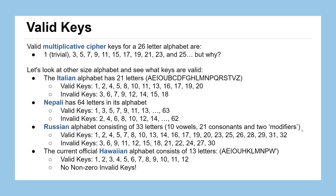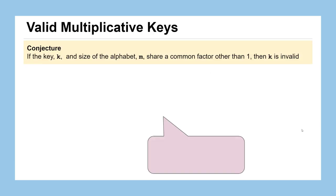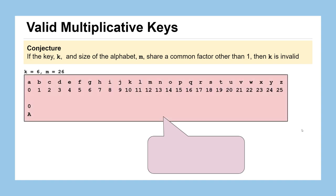So maybe update your guess. Here's our conjecture. If our key, which we'll represent with the letter K, and the size of the alphabet, which we'll represent with the letter M, share some common factor other than one, then K is an invalid key. Let's see why that's the case. Let's choose a key of 6 and an alphabet of size 26. We can see that K and M share a factor of 2. Instead of writing K equals 6, let's write it as K equals 2 times 3. And instead of writing M equals 26, let's write it as M equals 2 times 13. We call this the prime factorization of these numbers.